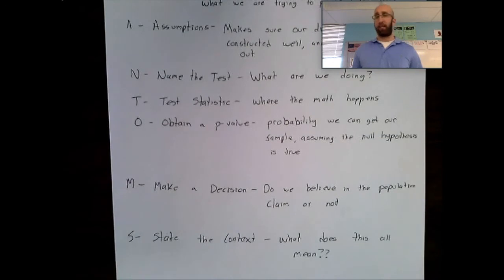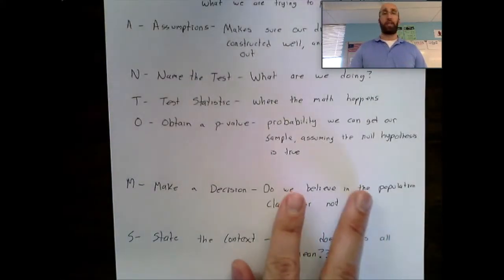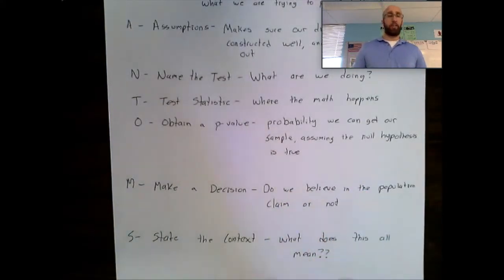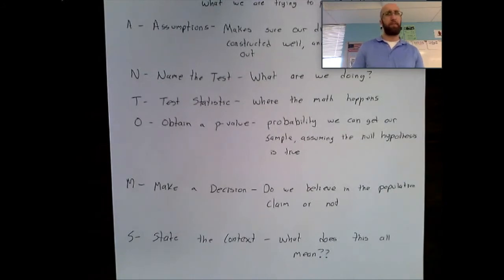And then we're going to state some context. Based on whatever decision I made, what does this all mean? What does this all mean for someone that actually is going to sit down and read this problem? And they're like, I don't know anything about statistics. What did I just read? You're going to explain what does this all mean in the context of the problem. So if you rejected or failed to reject, did we have sufficient evidence to prove the alternative or not? Did we do enough to prove what I was trying to prove in my alternative or not?